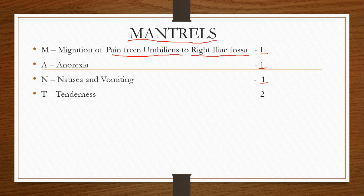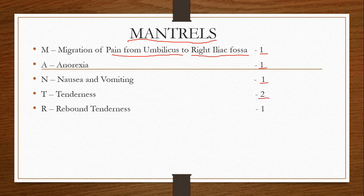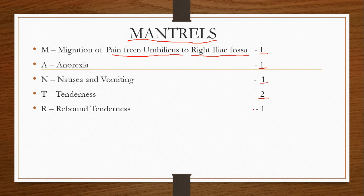T stands for tenderness, which means there is pain when you press that part of the body. If you gently press the right lower quadrant, there is pain — this sign is very important and the score is 2. R stands for rebound tenderness: you gently press the right lower quadrant and then suddenly lift your hand, and the pain occurs after lifting — this is rebound tenderness, score is 1.